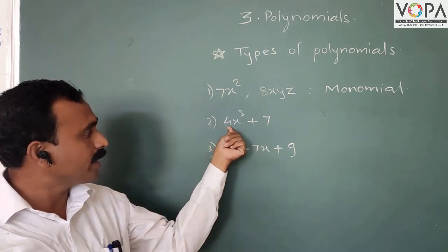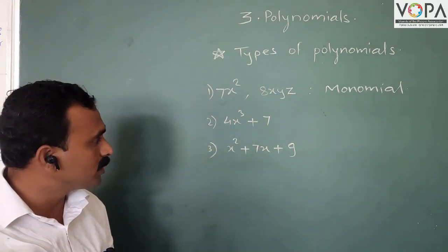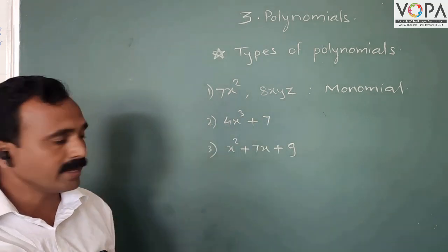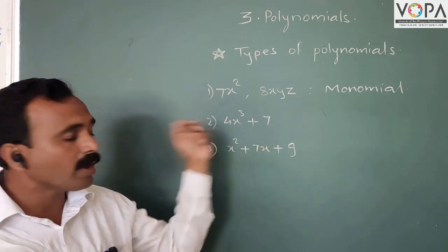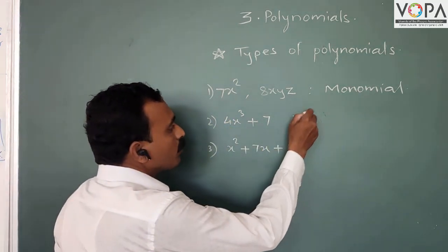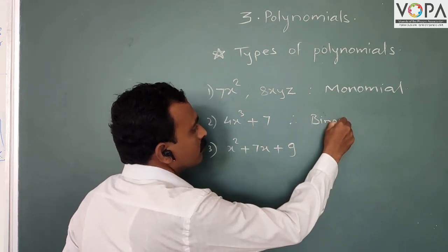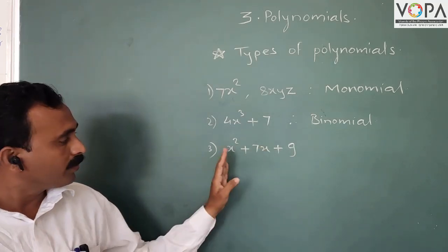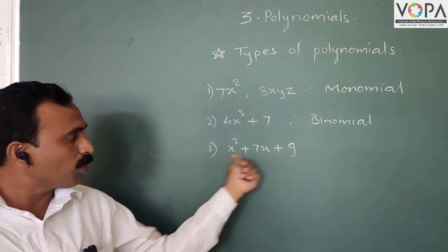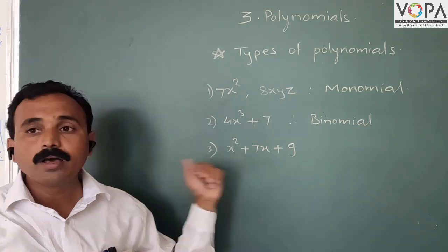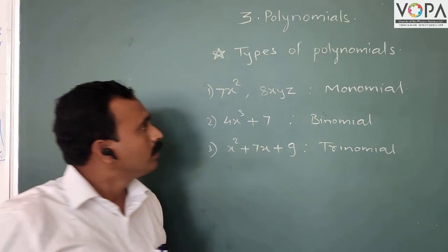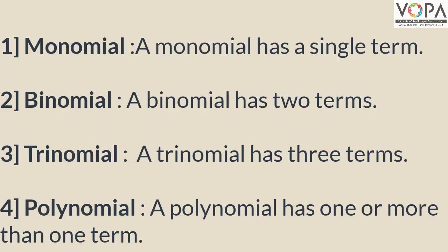The second type: 4x³ + 7. Here the indices are whole numbers, and there are two terms — 4x³ is the first term and +7 is the second term. Since the algebraic expression has two terms, it is called a binomial. The third type: x² + 7x + 9. This polynomial has three terms, so it is called a trinomial. In summary: one term is a monomial, two terms is a binomial, and three terms is a trinomial.